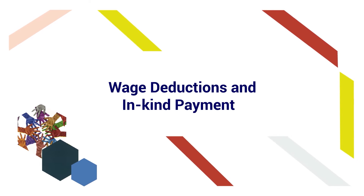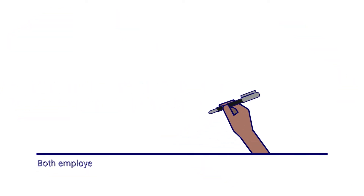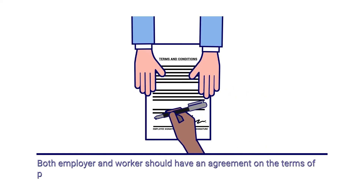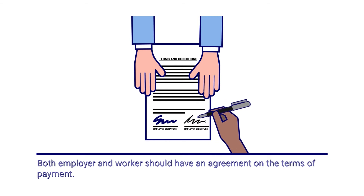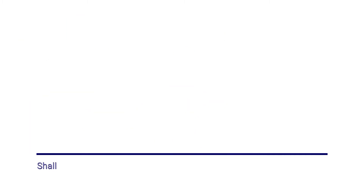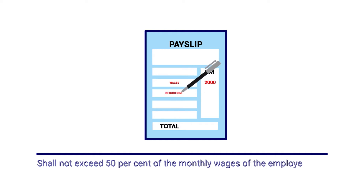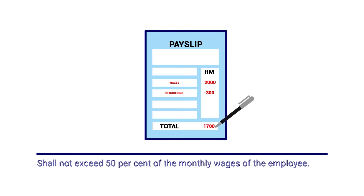Wage deductions and in-kind payments. For loans or advances, both employer and worker should have an agreement on the terms of payment. All payments must be issued with receipts. Deduction from wages shall not be made with the aim of indebting a worker and binding them to employment. Any legal deduction shall not exceed 50% of the monthly wages of the worker.